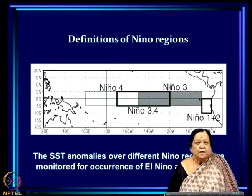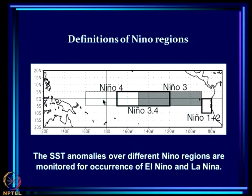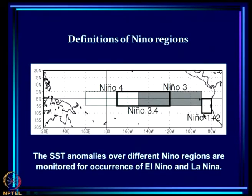The terms Niño 3 and Niño 3.4 refer to critical regions where SST anomalies are used as indices for El Niño. The original definition of El Niño involved SST anomalies off the coast of South America. Niño 1+2 is the region over which SST anomalies were defined corresponding to the traditional old definition of El Niño.